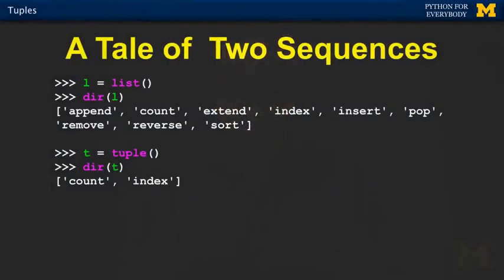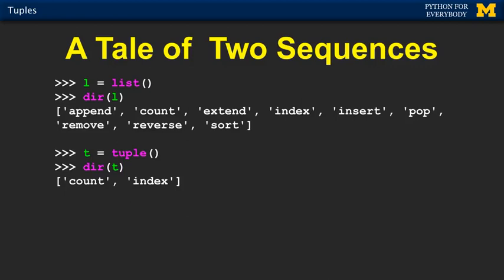And if you take a look at the directory output of lists and tuples, you see it's a subset. You can do count and index. Count looks up how many things match a particular value, and index says where a particular value is. But you can't do append, extend, insert, pop, or remove — because all those methods that tuples don't have are the ones that make changes to it.